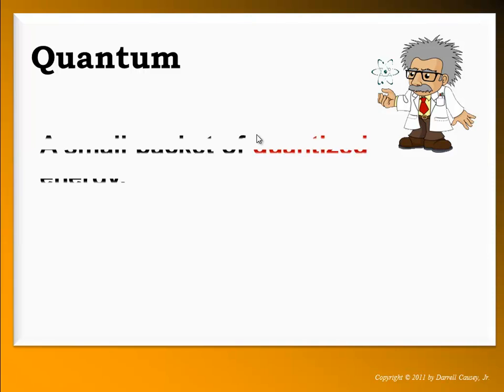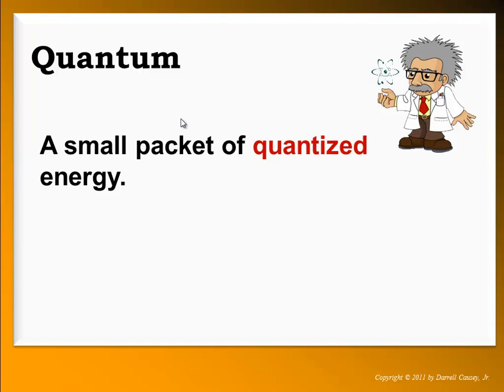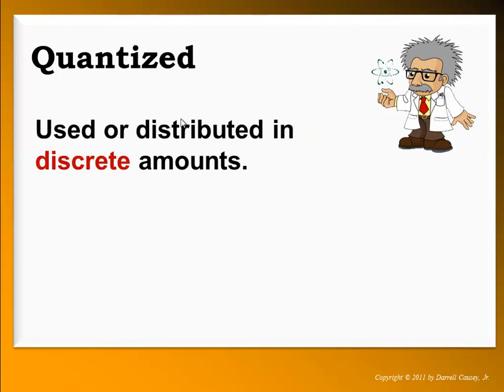And so what is a quantum? He defined a quantum as a small packet of quantized energy. And today we call these quantized energy photons. Now what do we mean by quantized? Quantized means to be used or distributed in discrete amounts. Like integers, discrete amounts are not continuous. There's no in between.